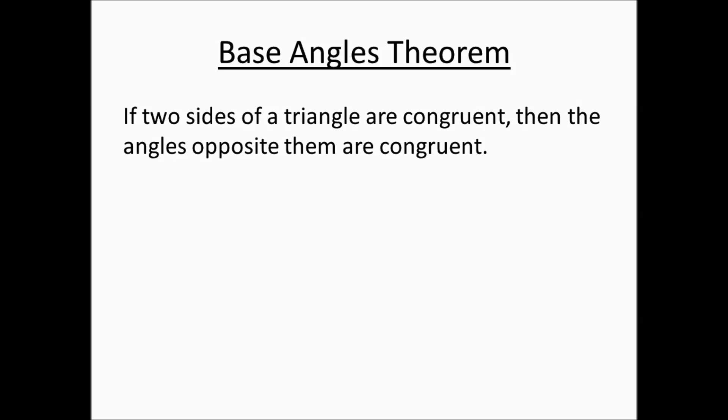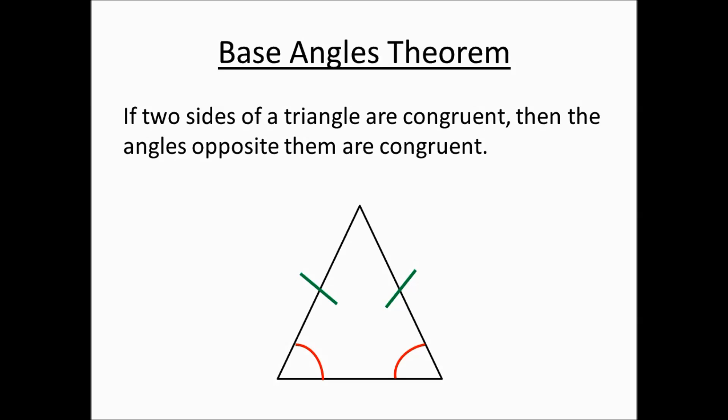The base angles theorem states that if two sides of a triangle are congruent, then the angles opposite them are congruent. Notice here that we have a triangle where two sides are congruent to each other. Therefore, due to the base angles theorem, the two angles that are opposite those two congruent sides are also equal to each other.